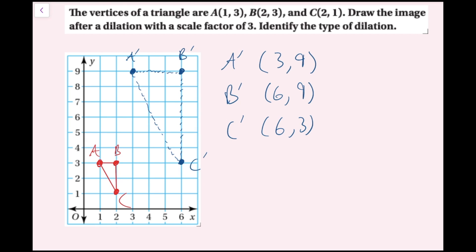Since my image is getting larger than my original figure, this is an enlargement. If my image was getting smaller it would be a reduction. All I had to do was multiply each component of the ordered pairs by the scale factor of three.